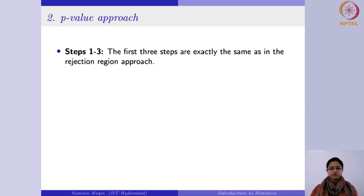The next method is the p-value approach. In the p-value approach, the first three steps are exactly the same — you check the conditions, set the hypothesis, decide the level of significance, and calculate your test statistic. The moment you enter the fourth step, instead of calculating the rejection region and comparing with the critical value, in this case we find out the p-value.